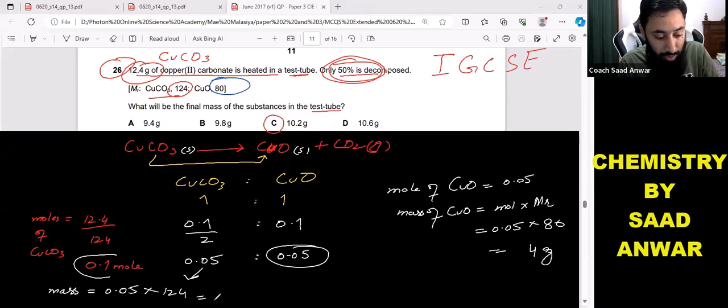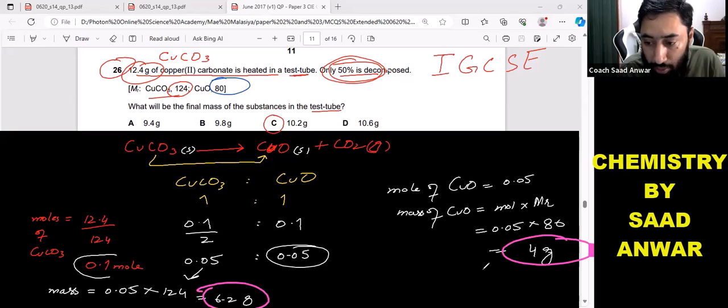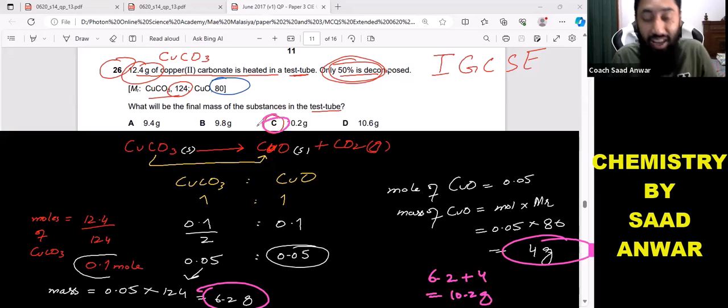Now guys, the last thing, just focus here. Mass of copper carbonate is 6.2 grams, mass of copper oxide is 4 grams. So when you add 6.2 plus 4, you will be getting 10.2 grams. So option C is the answer. This is how I solve this question.